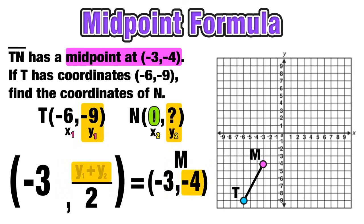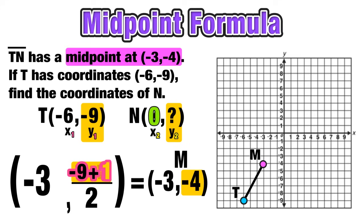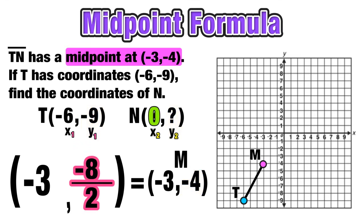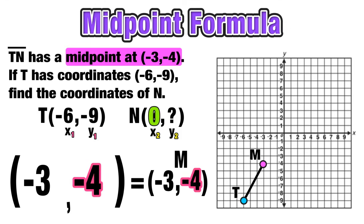Next, we find Y₂ in endpoint N. We know the y-value of the midpoint is negative 4, so we need: negative 9 plus what unknown value, divided by 2, equals negative 4. Solving algebraically, the unknown value is positive 1, since negative 9 plus 1 equals negative 8, and negative 8 divided by 2 equals negative 4, which matches the y-coordinate of midpoint M. So Y₂ of endpoint N is positive 1.